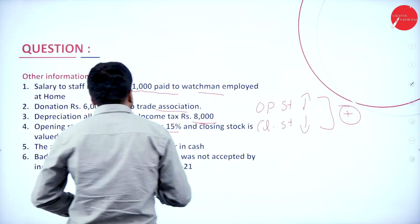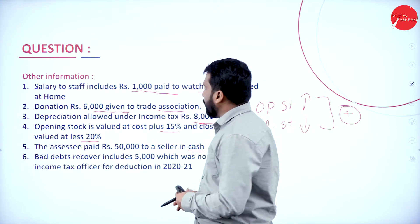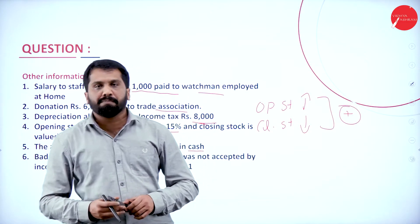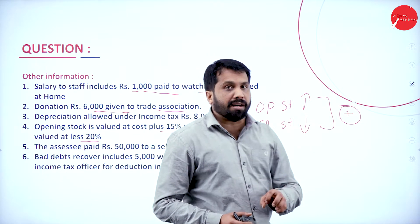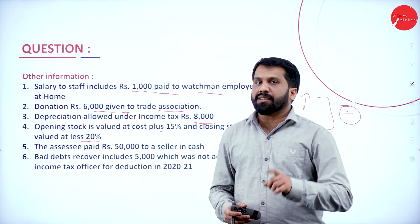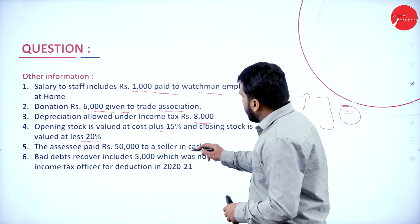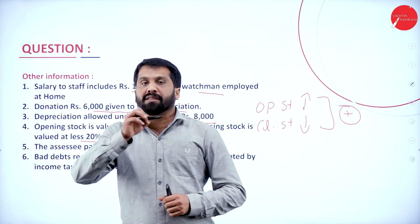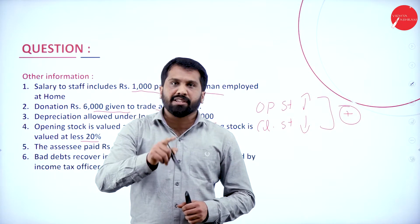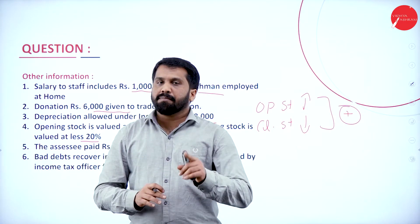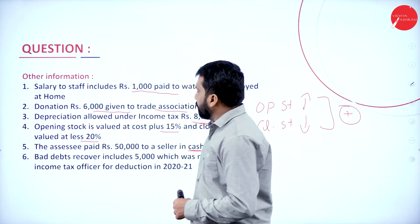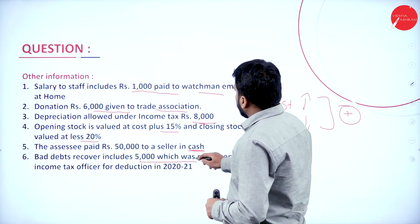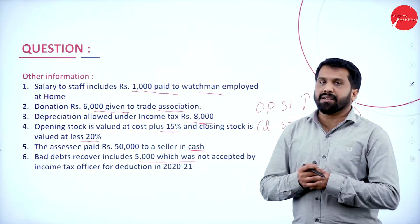Cash payment: 50,000 paid to seller in cash. Remember — anything paid more than 20,000 in cash must be considered a disallowed item, because payments above 20,000 must be made by cheque only. If paid in cash, that expense is not treated as a business expenditure. Also, bad debts recovered in an earlier year of 5,000 are an allowed item.